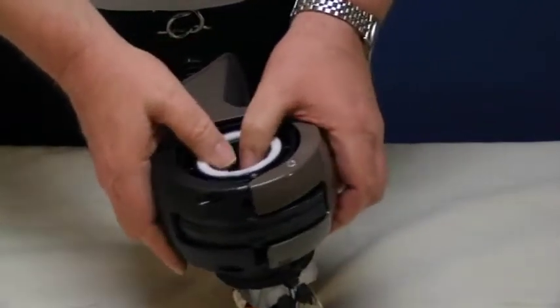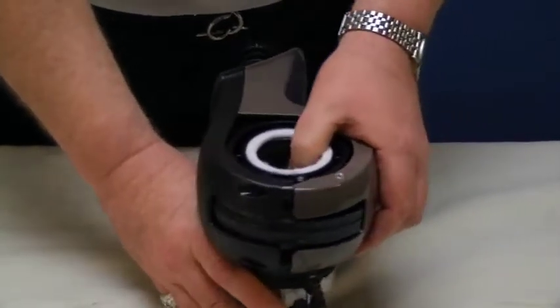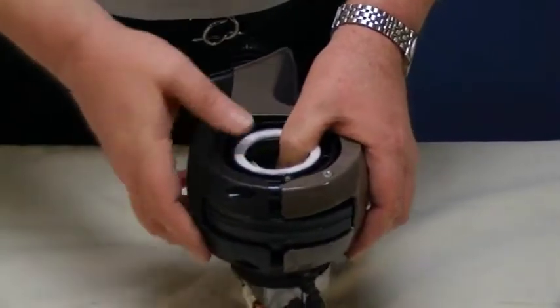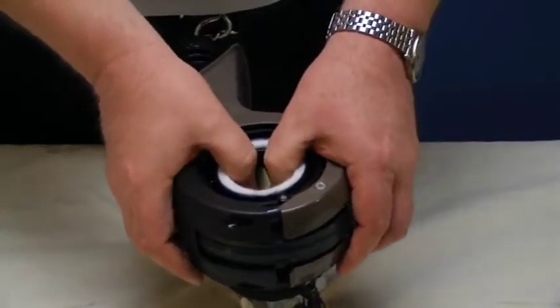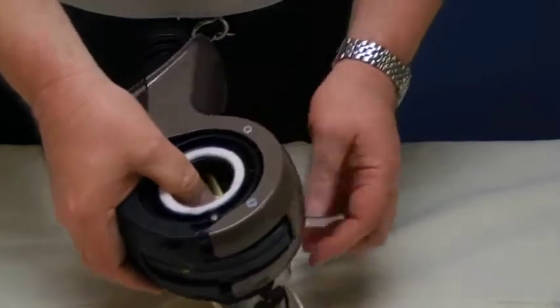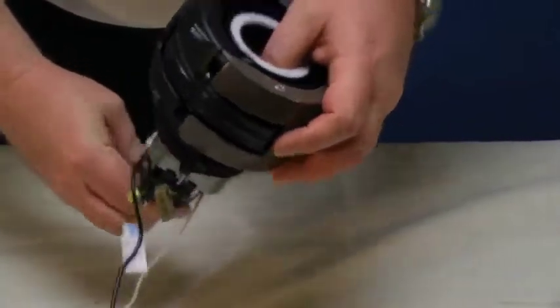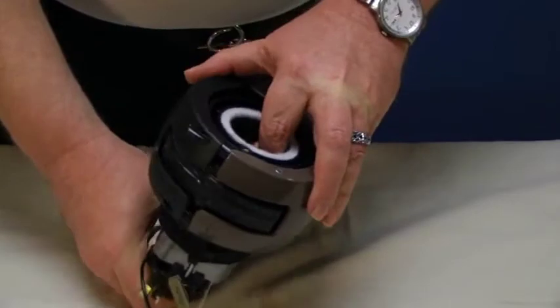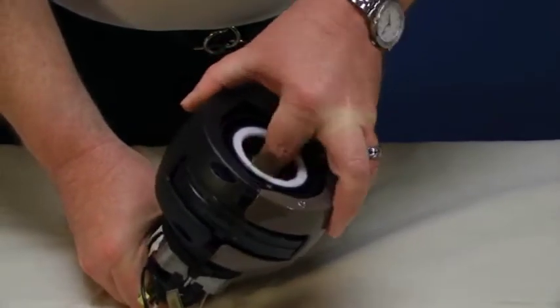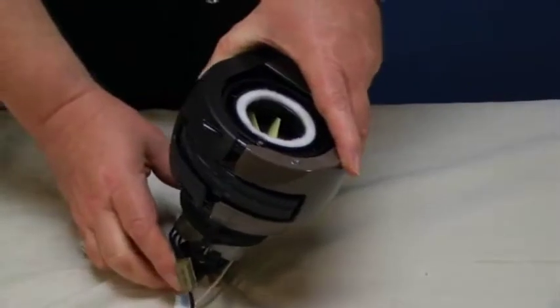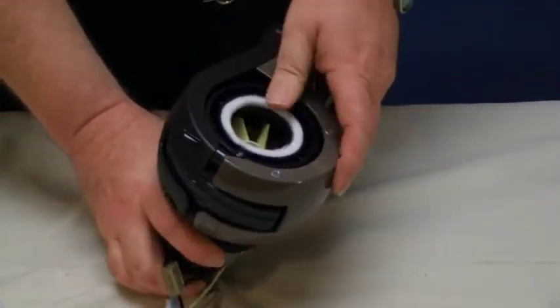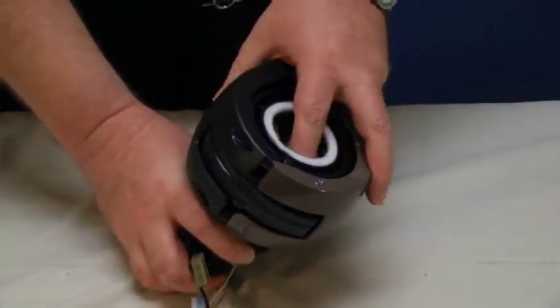For removal of the fan housing from the motor, you can use a puller and we're going to have some information and instructions provided on how to fabricate your own puller. This being a relatively new unit, I should be able to get this fan and fan housing separated from the motor. This being a relatively new unit, I'm able to easily separate the fan housing and fan from the motor.